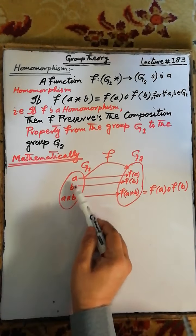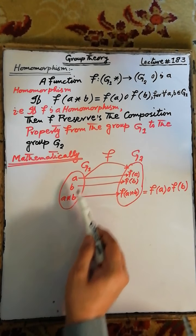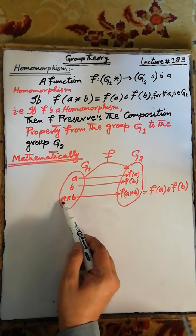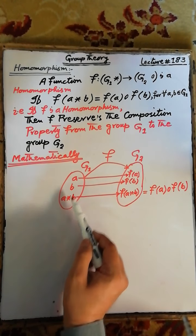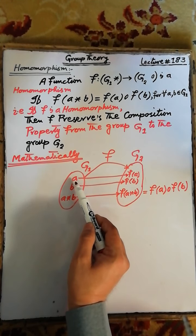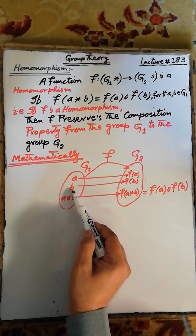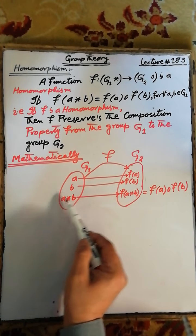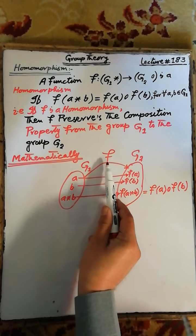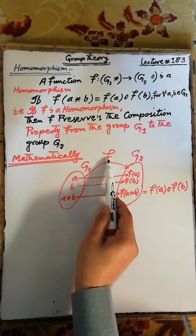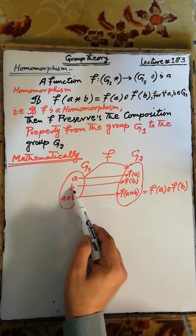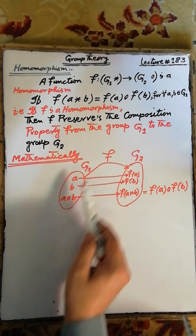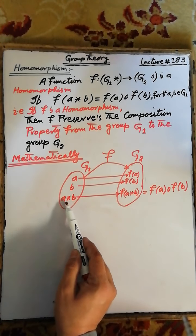Mathematically, if a and b are elements of the group G1, then a ★ b is again an element of G1, obtained from the operation of element a with element b under the binary operation defined in G1. The image of element a under the homomorphism f is f(a), and the image of element b under the homomorphism f is f(b).